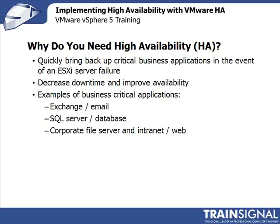High availability exists to avoid that. In the event that an ESXi host goes down, the VMs on that host will go down, but the trick with HA is how quickly can you spin them back up and return them to service. You add ESXi hosts in a cluster and manage their resources together, so when one host fails, VMs are restarted on the remaining hosts. This decreases downtime for critical applications like Exchange, SQL Server, SharePoint, file servers, and web servers.